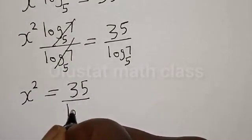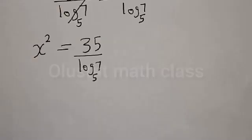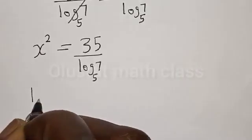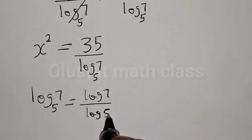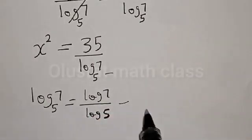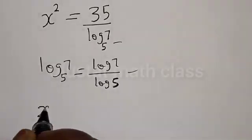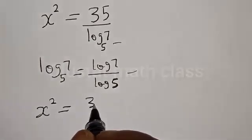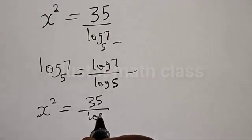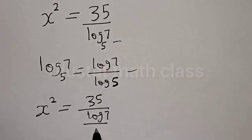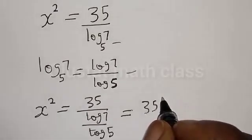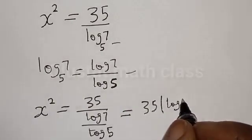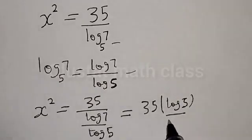Note that log 7 base 5 is the same as log 7 divided by log 5, by the change of base formula. So let's replace it: we have x squared is equal to 35 divided by log 7 divided by log 5, which equals 35 times log 5 divided by log 7.